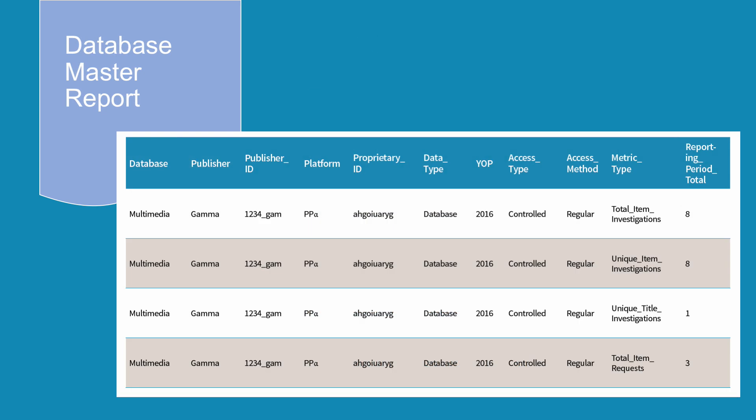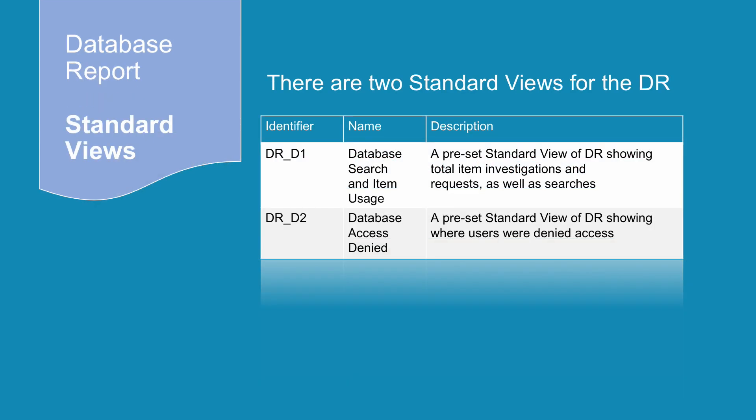Here is an example of part of a DR in action. A DR has been generated for the multimedia database on publisher platform Alpha, covering the period from 1st January to 30th June 2017. Users from Sample University have investigated eight items in the database and requested the full record for three of those items. A DR can be filtered according to user needs and has two standard views.